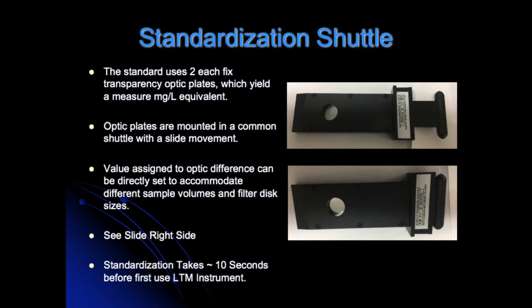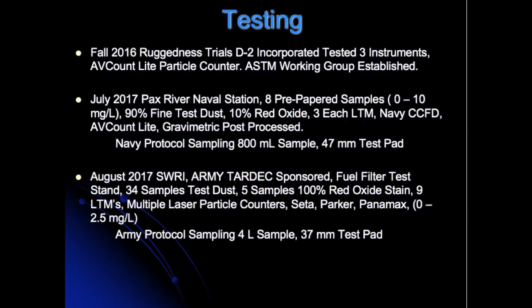The standardization process takes about 10 seconds and must be run before the first use of the LTM instrument. A large amount of testing has already been done. In Fall of 2016, in RUGNUS trials, D2 Inc. tested three instruments, including the Abcount Light Particle Counter, and an ASTM Working Group was established.